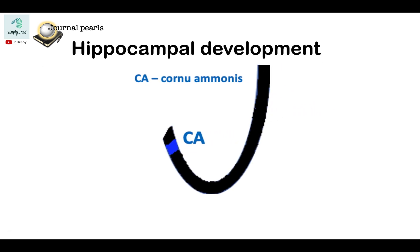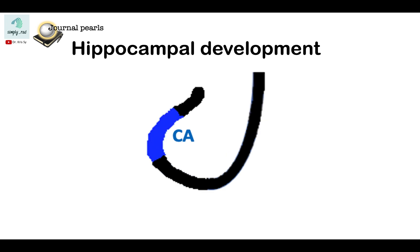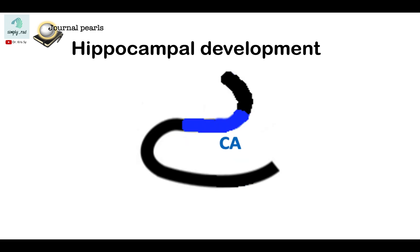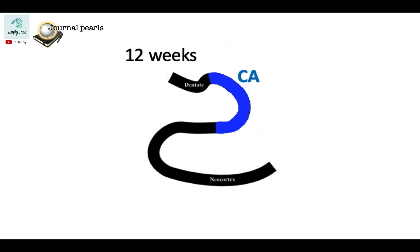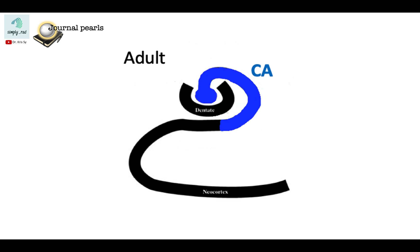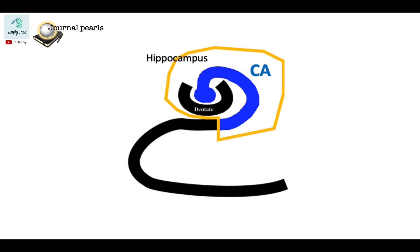This neocortex undergoes marked expansion. And because the neocortex grows more than the hippocampus, the hippocampus is folded inwards. So in the adult, we see an interlocked dentate gyrus and cornu ammonis.